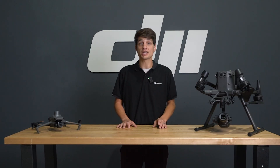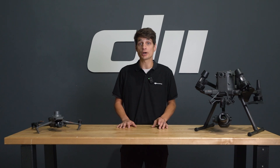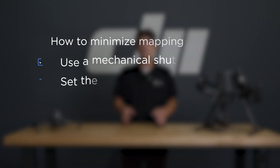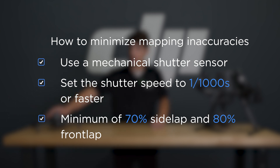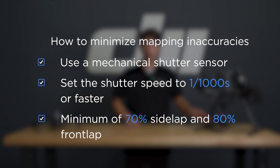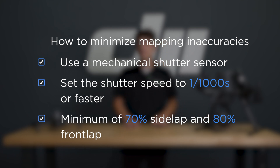This further validates the need for survey grade drone hardware. Some tips for minimizing inaccuracies include using a mechanical shutter sensor like on the Mavic 3 Enterprise or the Zenmuse P1, capturing with a fast shutter speed, and flying with a minimum of 70% side lap and 80% front lap.